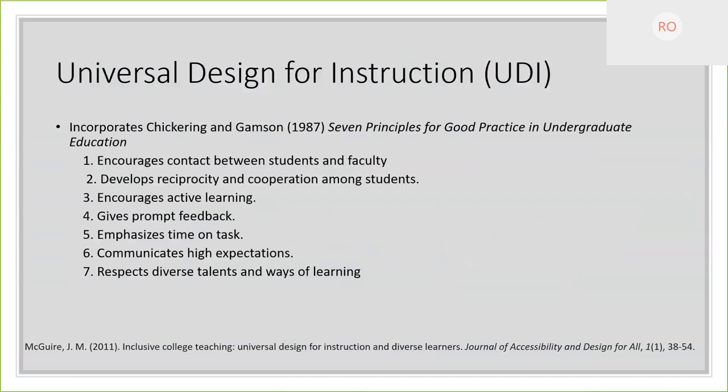Many of you have probably heard about Chickering and Gamson's seven principles for good practice in undergraduate education. When Scott and colleagues developed Universal Design for Instruction, they also incorporated these seven principles: encouraging contact between students and faculty, developing reciprocity and cooperation among students, encouraging active learning, giving prompt feedback, emphasizing time on tasks, communicating high expectations, and respecting diverse talents and ways of learning.